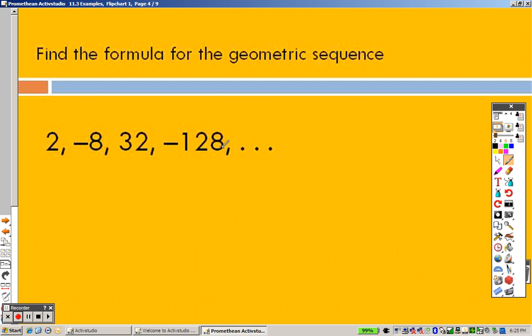So, find the formula for the geometric sequence. Well, here's the formula for a geometric sequence. A sub 1, r to the n minus 1. Where r is the ratio of the terms, and this is still the first term. So, the ratio.